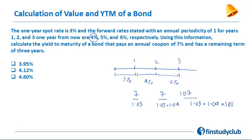The second $7 is 2 years away, so I discount it consecutively with 3% and 4%: 1.03 × 1.04. And the $107 gets discounted by 3%, 4%, and 5%. Then we add it all up to arrive at the value of the bond.